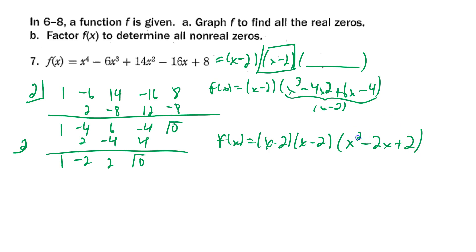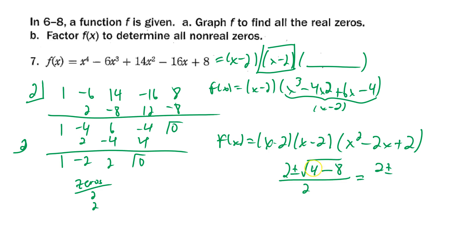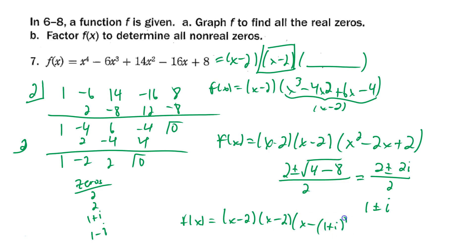x² - 2x + 2 can't be factored, so we use the quadratic formula: (2 ± √(4-8)) / 2 = (2 ± √(-4)) / 2 = (2 ± 2i) / 2 = 1 ± i. Our zeros are 2 (double root), 1+i, and 1-i. The complete factored form is f(x) = (x-2)(x-2)(x-(1+i))(x-(1-i)).